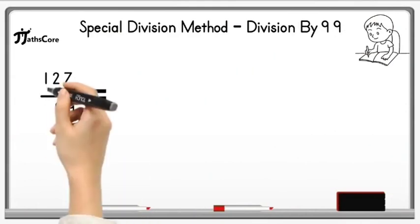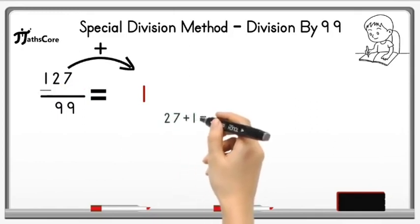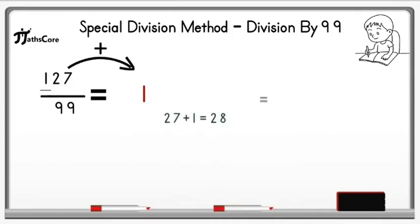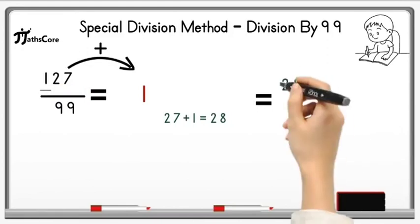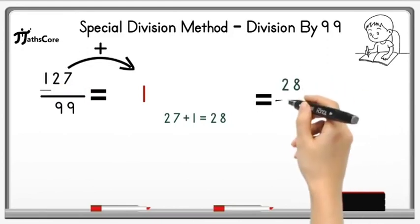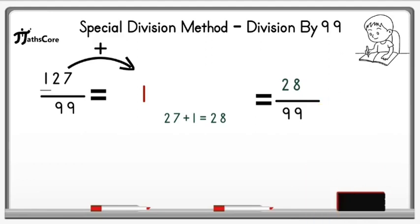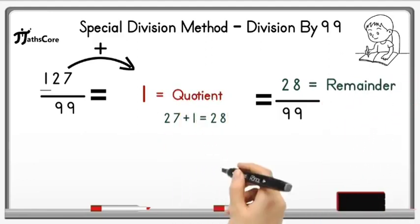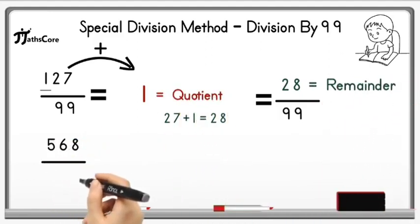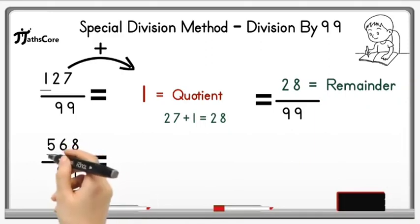First, write down the hundreds digit, which is 1, and then add 27 to it. So 27 plus 1 equals 28. Now divide 28 by 99 — but it is not possible because 28 is less than 99. So 28 is the remainder and 1 is the quotient. The second example is 568 divided by 99.